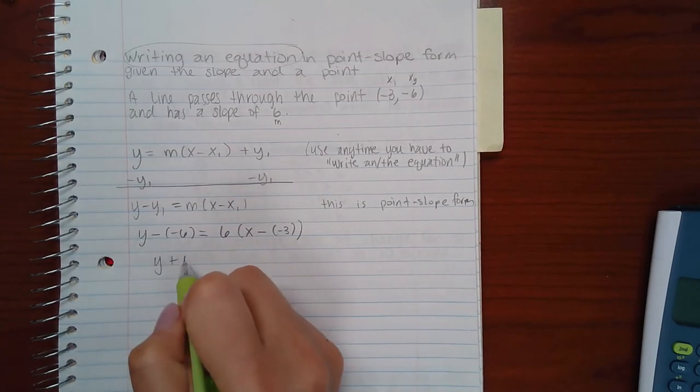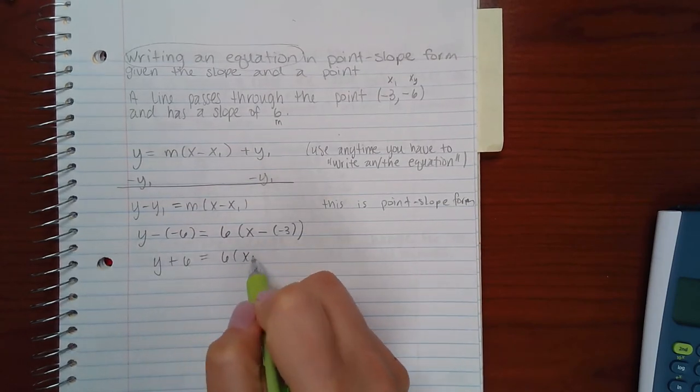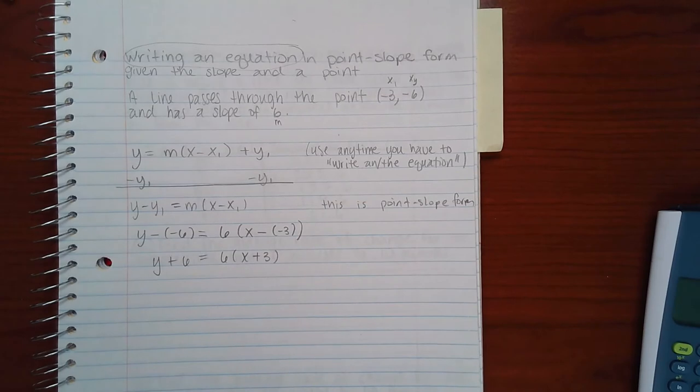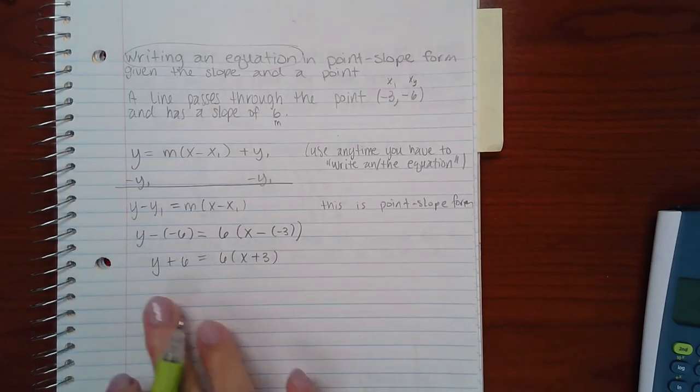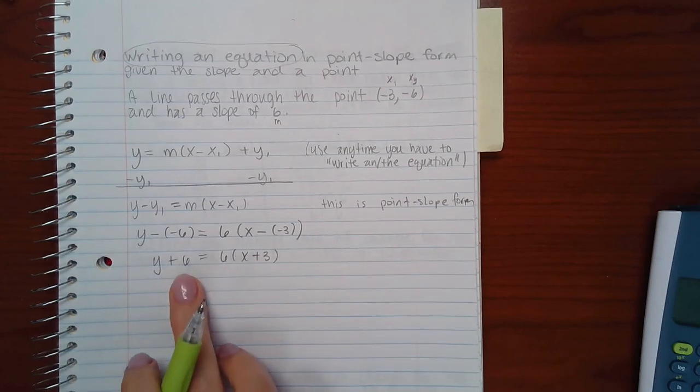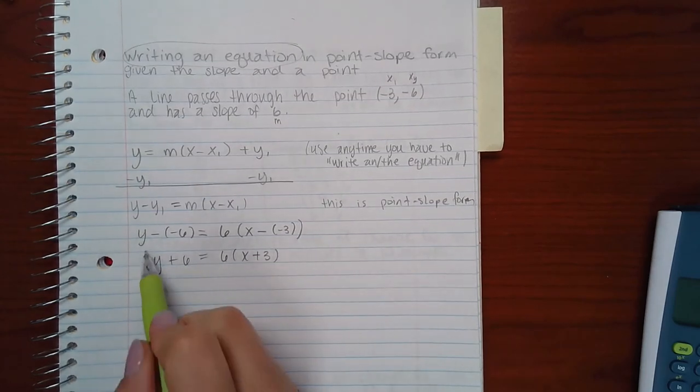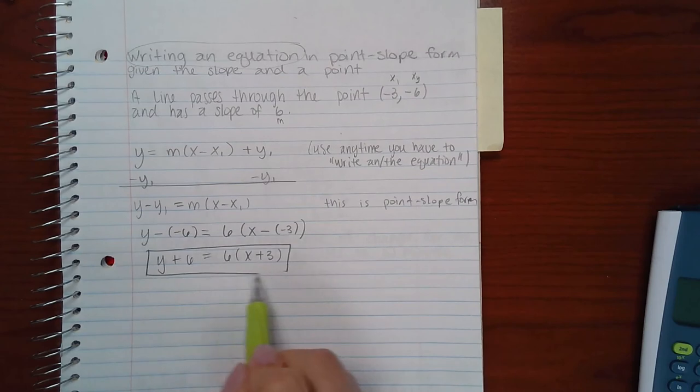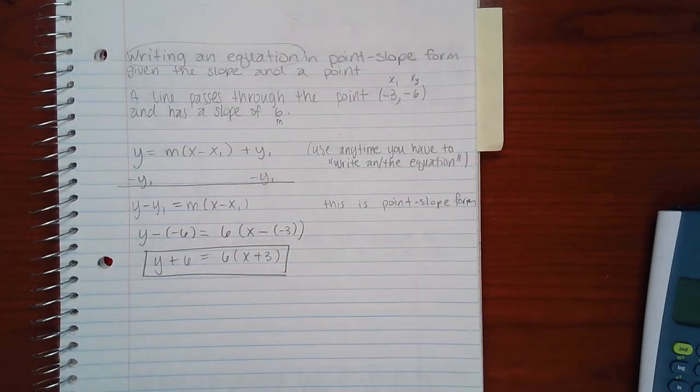If I clean up my double signs, I have this equation. And since it wants me to keep it in point-slope form, you do not distribute the 6 and move this 6 over to the right hand side. You leave it exactly the way it is. And that is in its point-slope form.